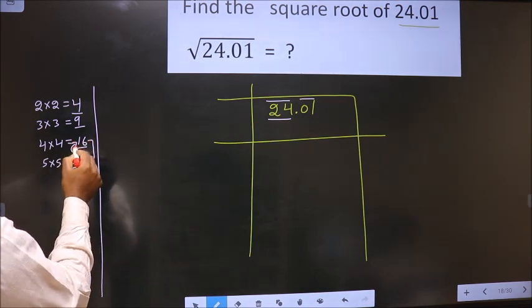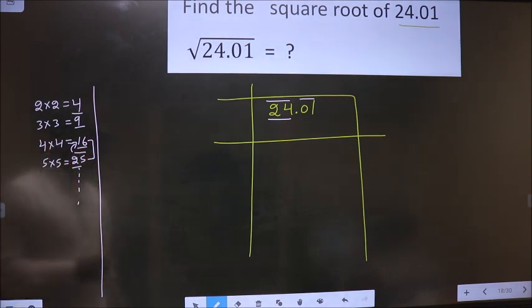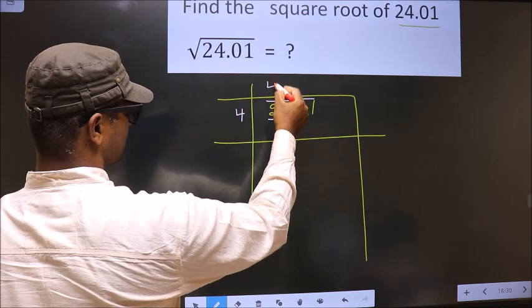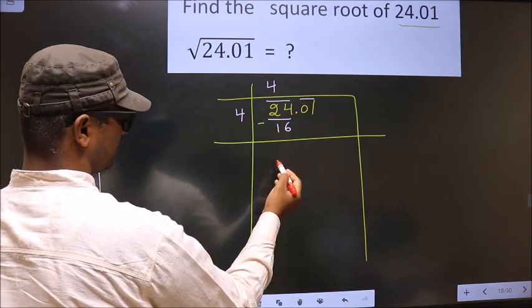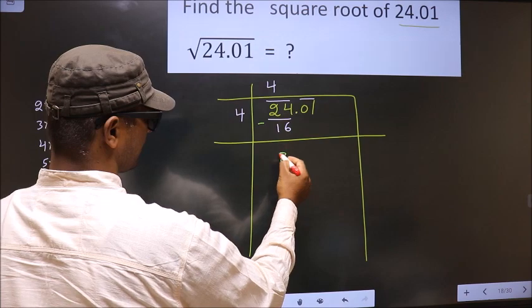So we take the smaller number, that is 16. 16 is 4 times 4. So we take 4, 4 is 16. Now you subtract. So 24 minus 16 is 8.